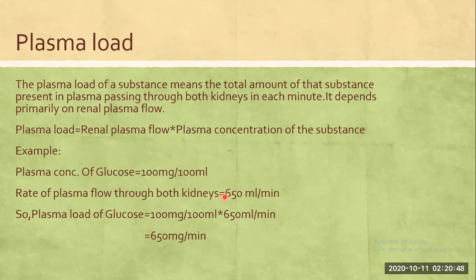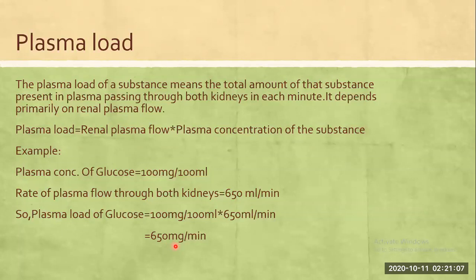The renal plasma flow is about 650 ml per minute. We measure the plasma concentration of the substance — for example, glucose is 100 mg per deciliter, which is 100 mg per 100 ml. So the glucose plasma load is 650 mg per minute.